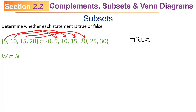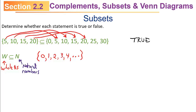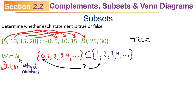How about this? Is W a subset of N? Remember, capital W is the symbol for whole numbers — the counting numbers with 0 thrown in: {0, 1, 2, 3, 4, ...}. Capital N is the symbol for natural numbers, the counting numbers starting with 1: {1, 2, 3, 4, ...}. The very first element you look at — 0 on the left — does not have a match on the right. That means the statement is false. The whole numbers are not a subset of the natural numbers.